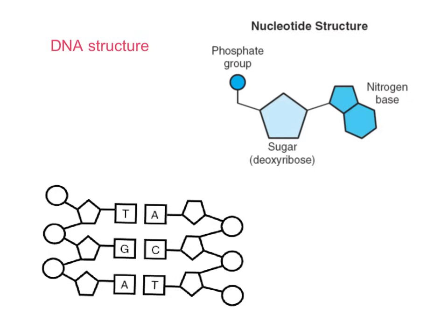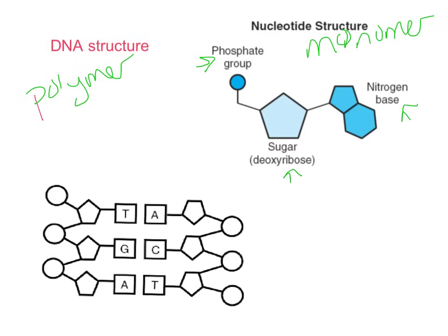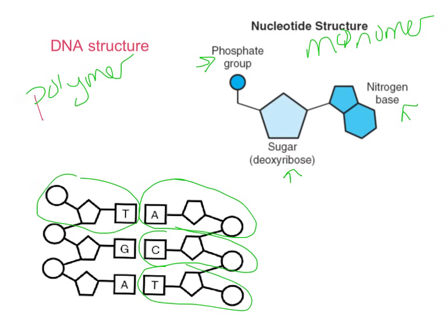DNA is a polymer made up of the monomer nucleotides. A nucleotide is made up of a phosphate, a sugar, and a nitrogen base. All these monomers link together to make up the polymer — poly means many. The sugar for DNA is deoxyribose. We have four different nitrogen bases: adenine, thymine, guanine, and cytosine, grouped into purines and pyrimidines.